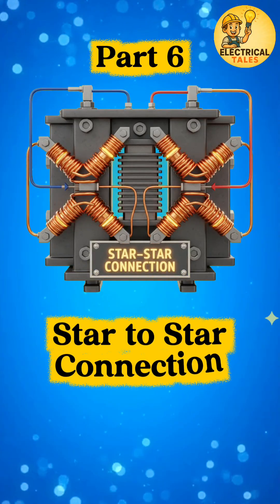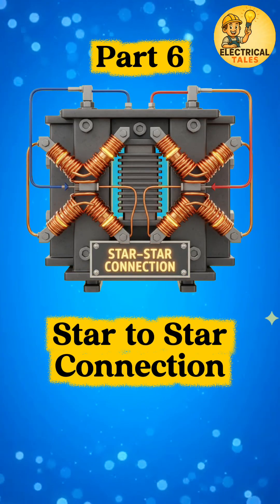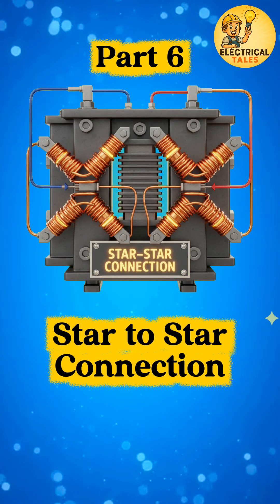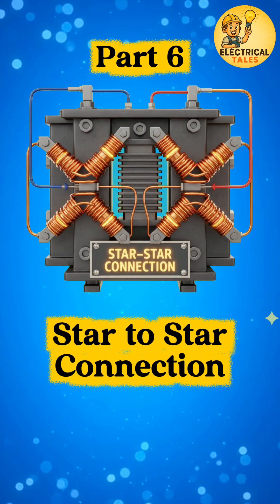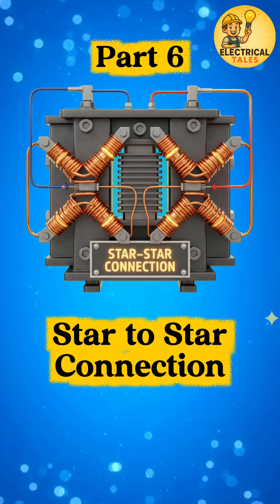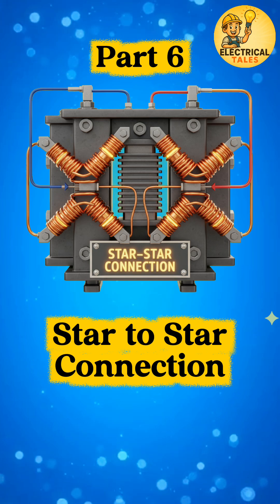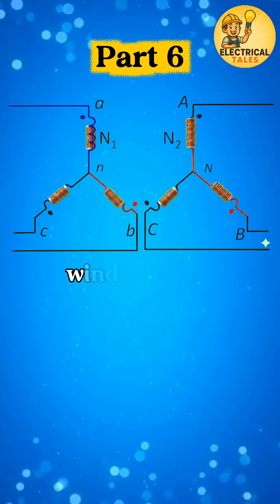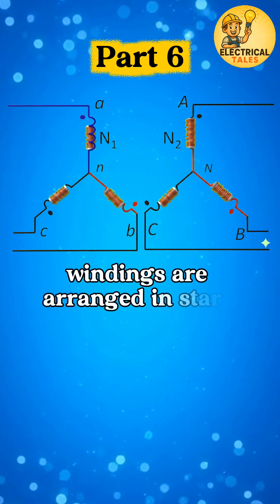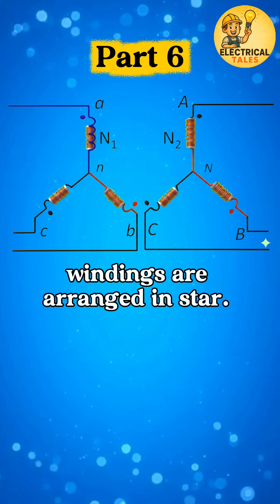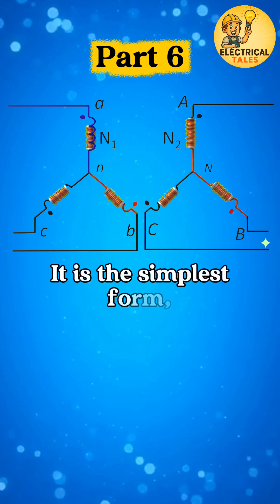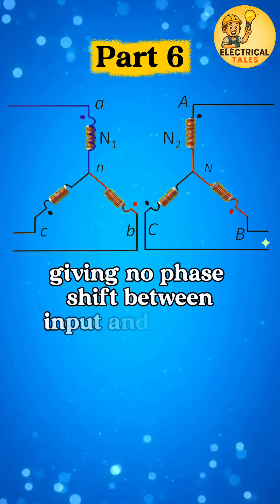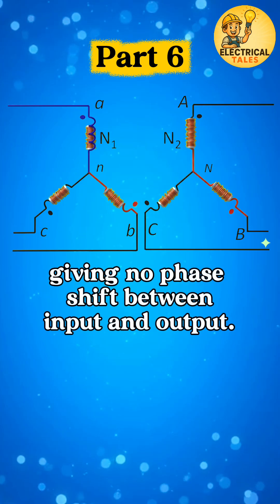After explaining parallel connections, let's now move to another important type: the star-to-star transformer connection. In this connection, both the primary and secondary windings are arranged in star. It is the simplest form, giving no phase shift between input and output.